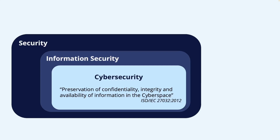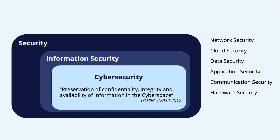Narrowing the scope further, there are also terms used to describe specific aspects of cybersecurity, such as network security, cloud security, data security, application security, communication security, hardware security, software security, web security, and so on. The list seems to never end as we narrow down what we try to describe or protect. We will talk about terminology in cybersecurity, but the terminology is surely relevant to information security as a whole, also the parts that are not in the cybersecurity subfield.